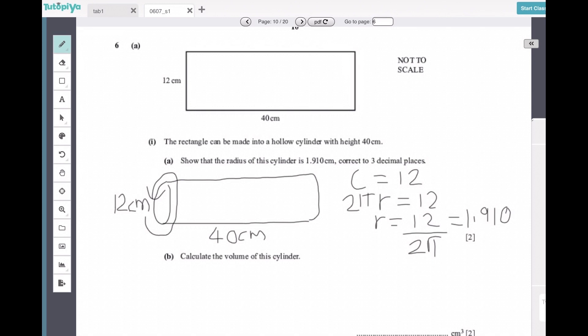The next thing: calculating the volume of the cylinder. Now a cylinder is a type of prism, and for any prism, the way to calculate the volume is always the cross-sectional area times by the length or the height.